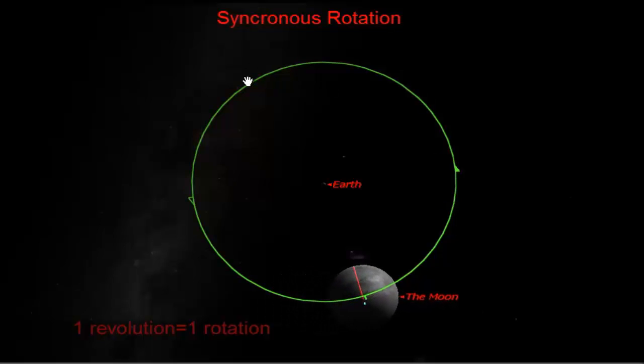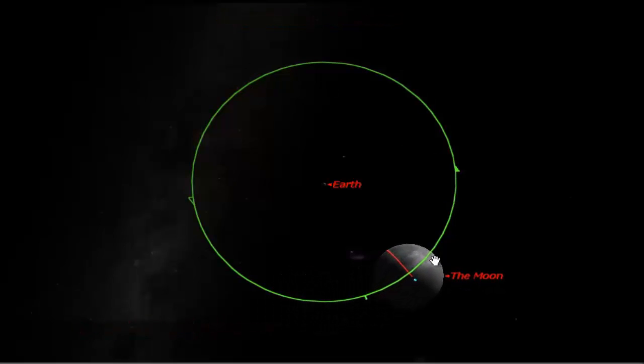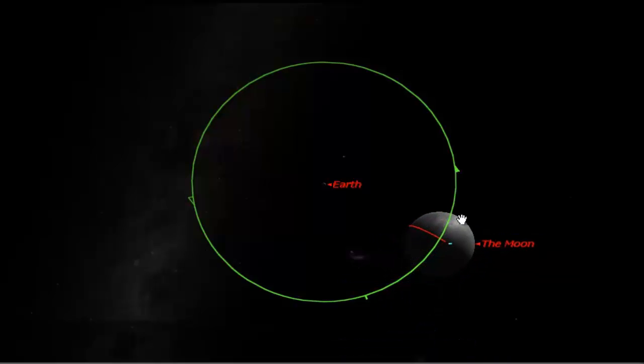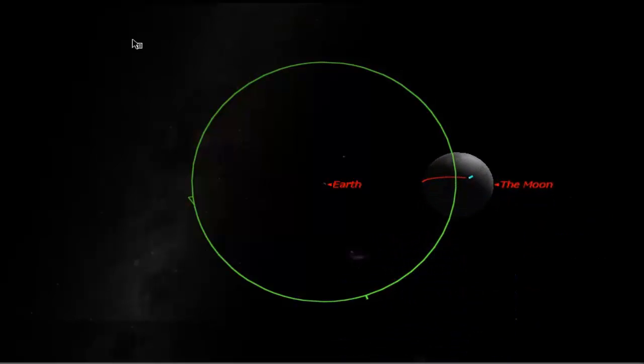So again, it's spinning once on its axis for every one time it goes around the Earth. That's why we see one side of the moon. If it was not equal to each other, we would eventually see all different sides of the moon.